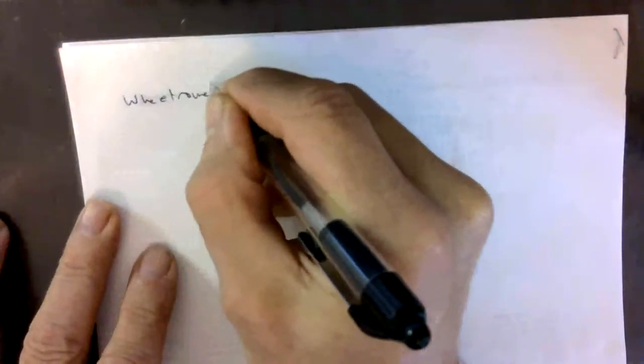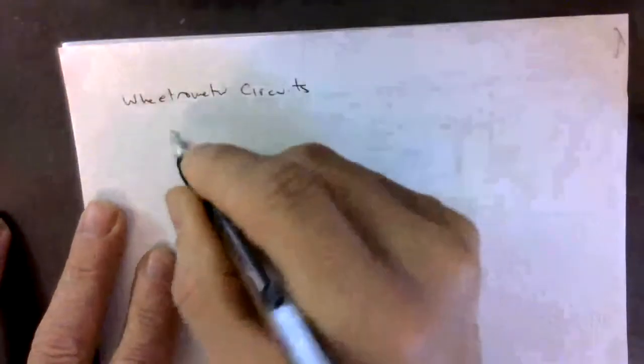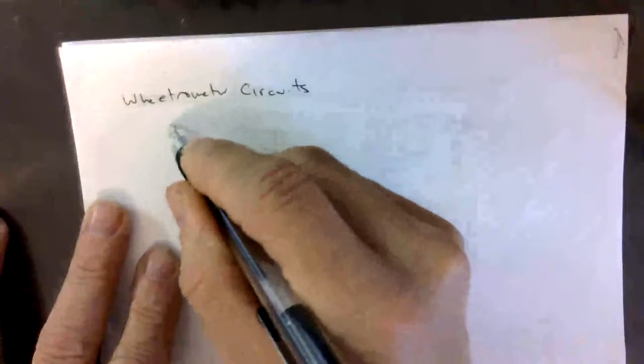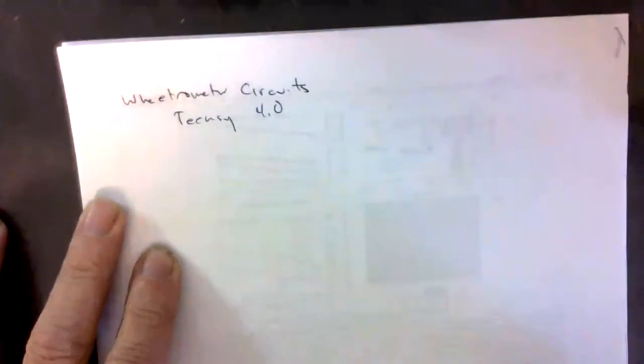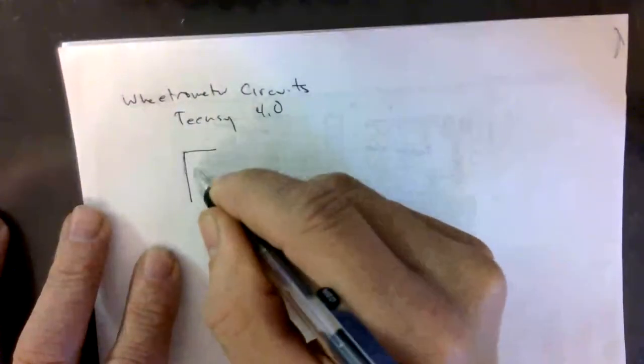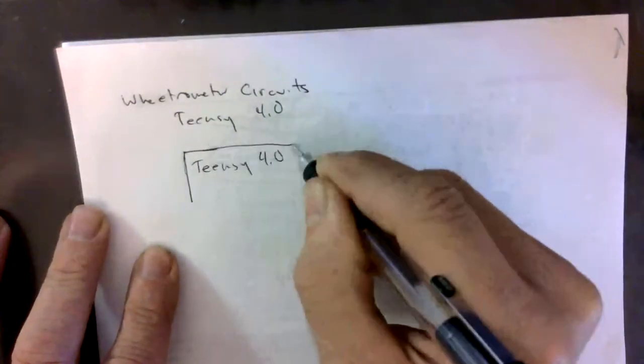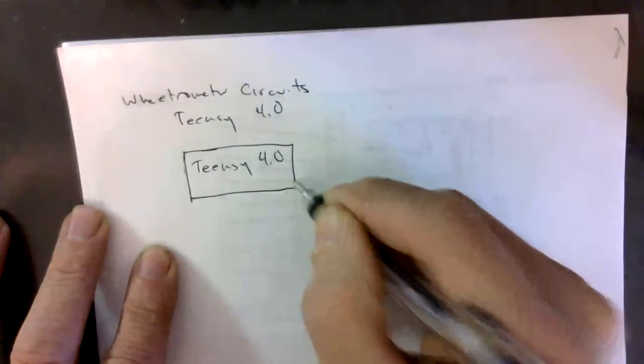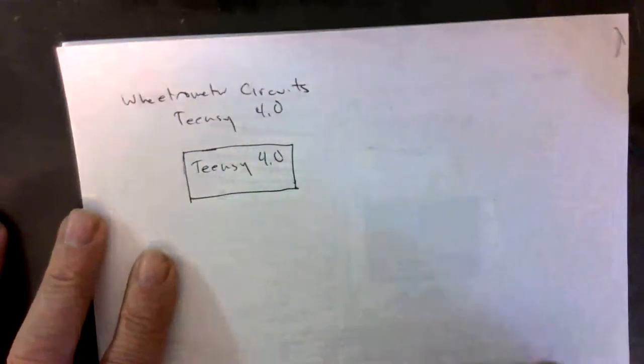All right, so now we're going to discuss the Weetraometer circuits. The Weetraometer that we're talking about is the Teensy 4.0 version, and it uses the Teensy 4.0 microcontroller development board to control the spectrometer.